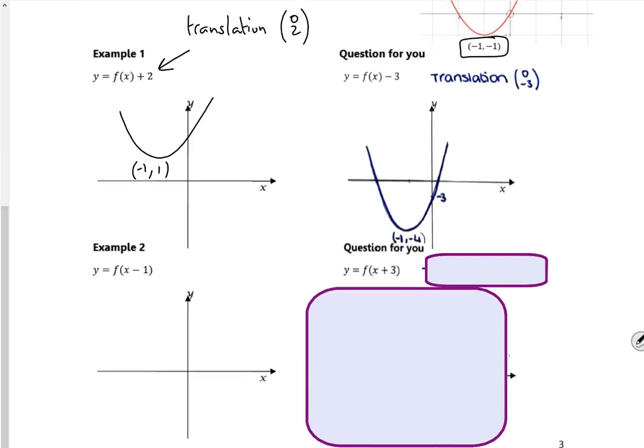Right, next one. So it's a minus 1, so you think it's going left, but it's actually going right. If it's inside the bracket, you do the opposite, so that's a translation, so it's going right by 1, and that's where I made a mistake last time. I put a minus 1 there, my mistake. So it takes the bottom of it and moves it right, so the vertex, instead of being minus 1 minus 1, will now be 0 minus 1.